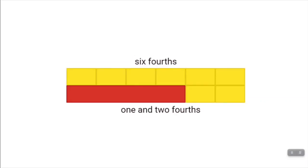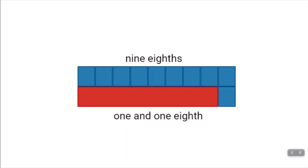Present six fourths to students and ask: how many fourths are represented? Count the fourths. There are six fourths. Four fourths compose one whole and there are two fourths left. Six fourths is the same as one and two fourths. Present nine eighths to students and ask: how many one eighths are represented? Count the eighths. There are nine eighths. Eight eighths compose one whole and there is one eighth left. Nine eighths is the same as one and one eighth.